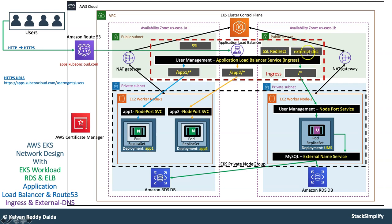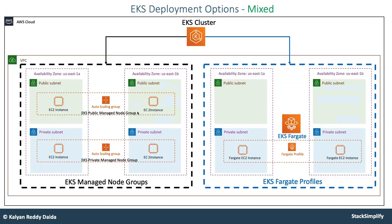External DNS automatically registers your domain name in the Route 53 service from the Kubernetes manifest. Once all these are completed — database part, deployments part, and load balancer part — the next step is how to run these in Fargate serverless, and we will move on to that section.